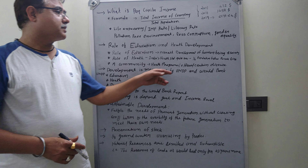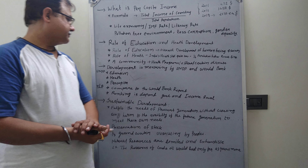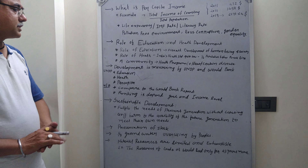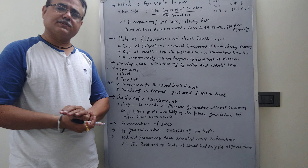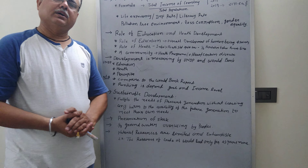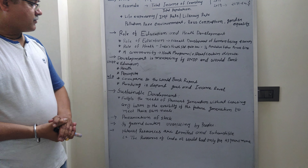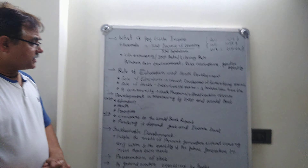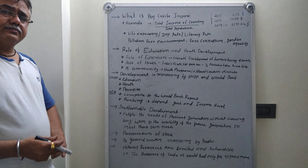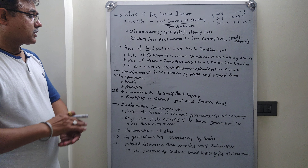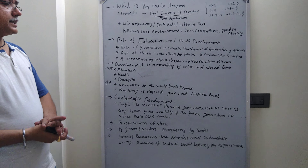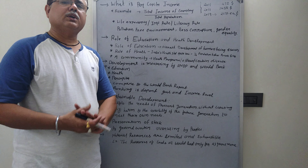Development is measured by UNDP and the World Bank. UNDP measures education facilities provided in the country as well as the per capita of the country. The World Bank also marks education, health, per capita, and other things such as the goal of the nation and total income of the nation.